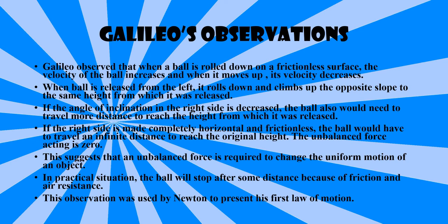If the right side is made completely horizontal and frictionless, the ball would have to travel an infinite distance to reach the original height. The unbalanced force acting in this case is zero. This suggests that an unbalanced force is required to change the uniform motion of an object. In a practical situation, the ball will stop after some distance because of friction and air resistance. This observation was used by Newton to present his first law of motion.